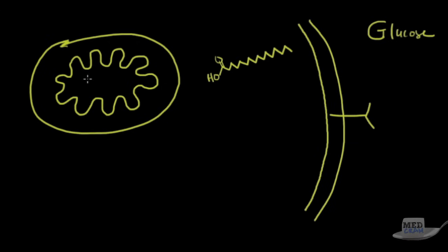You'll recall this is where Krebs cycle occurs. I'll abbreviate that as KC, and this is where you have beta-oxidation. Remember these fatty acids move inside the cell.